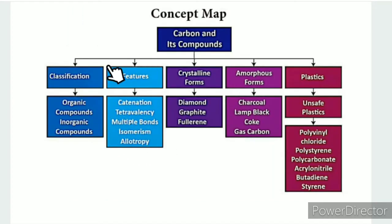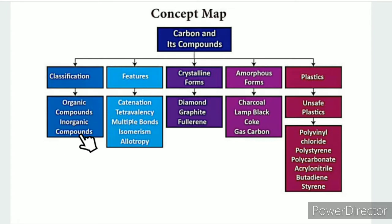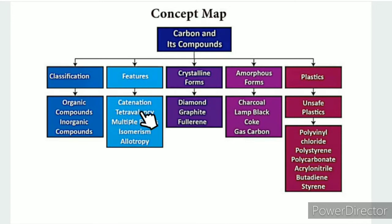In the concept map classification, we are going to see that carbon forms organic and inorganic compounds. Carbon in living things forms organic compounds, while carbon in non-living things such as rocks and mountains forms inorganic compounds. That is an introduction to the special features of carbon.